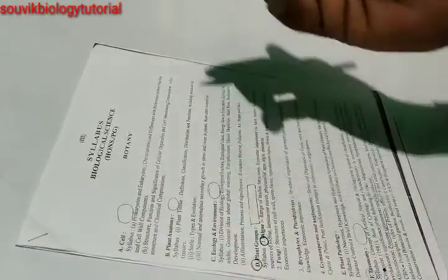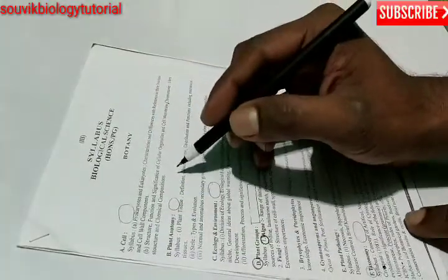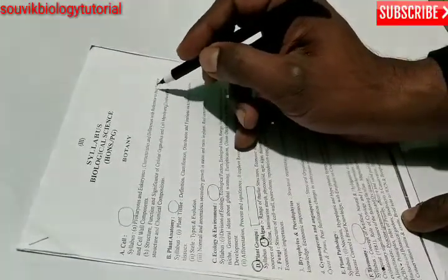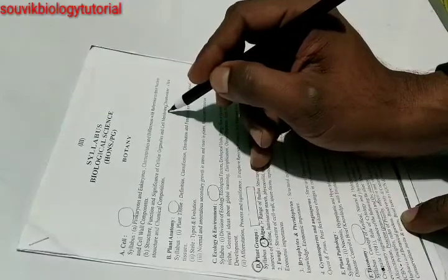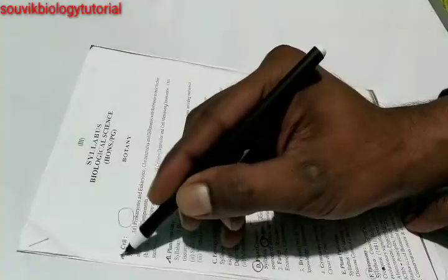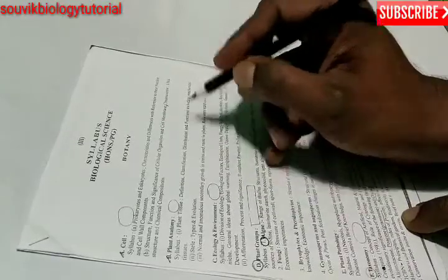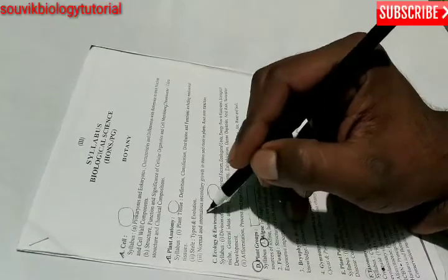Now this is the botany syllabus for PG or 11-12 level. First chapter is cell which includes the prokaryotes and eukaryotes characteristics and differences with reference to their nuclear and cell wall components. Next is structure, function and significance of cellular organelles and cell membrane, chromosome ultrastructure and chemical compositions. Next is plant anatomy. The syllabus is plant tissue which includes definition, classification, distribution and functions including mechanical tissues, steely types and evolution.